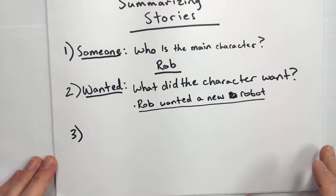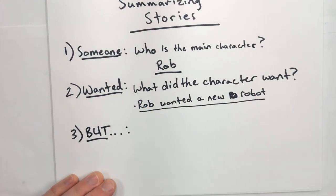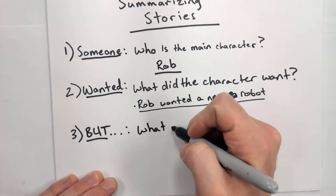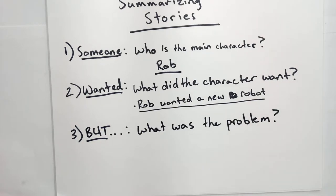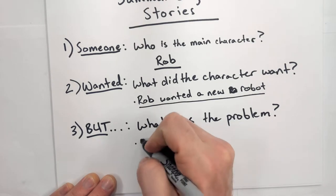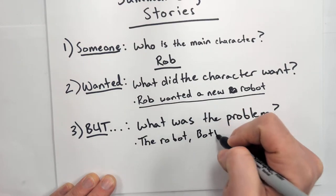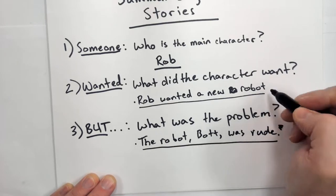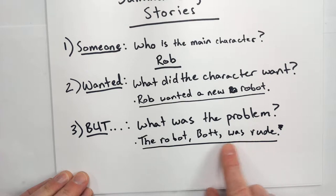Part three: we have to think — who is the main character, and what did they want? Rob wanted a new robot. But what was the problem? The problem was that the robot — in this case, his name was Bot — was rude.